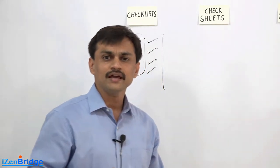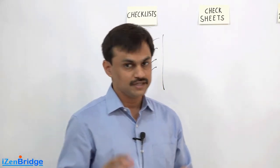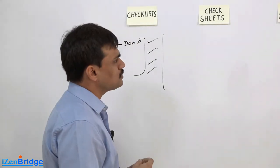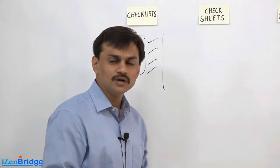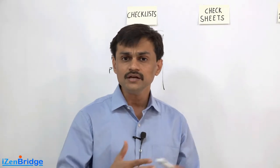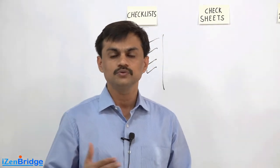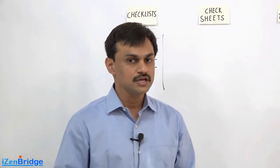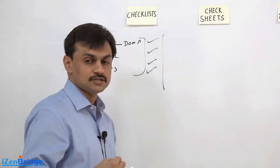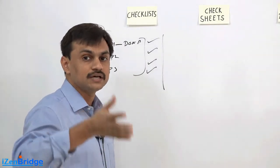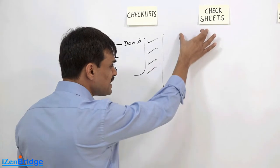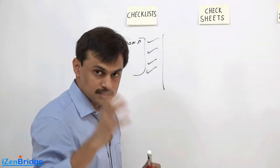Checksheets. Checksheets are more like an observation tool — they are not checklists. Say you are running a restaurant and you want to ensure quality, so periodically every day you do some auditing reviews and observe the number of occurrences of particular things. These are areas of concern.